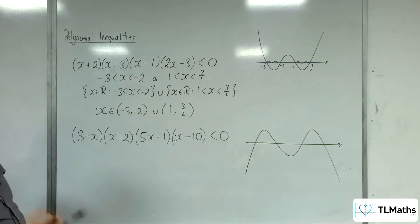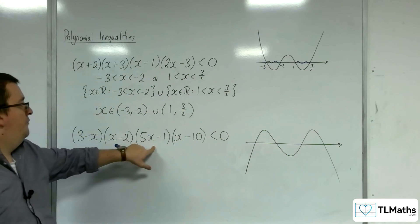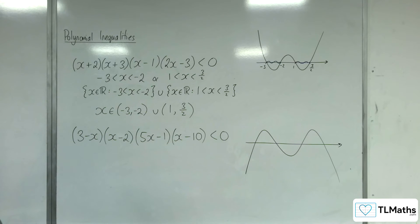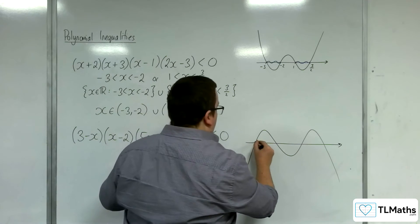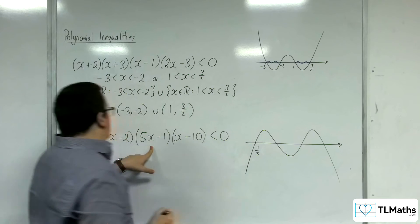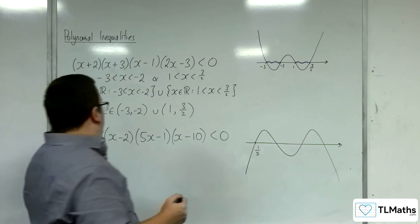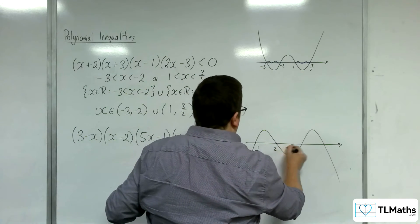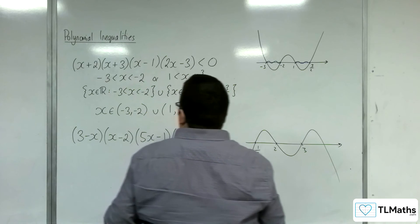So where is it crossing? We've got 3, 2, 1 fifth, and 10. So 1 fifth is going to be first. We have 2, then 3, and then 10.